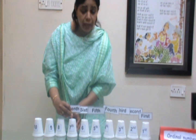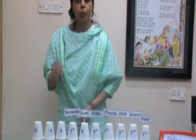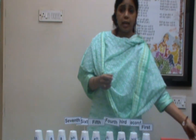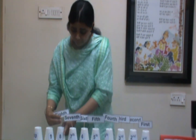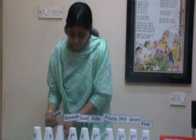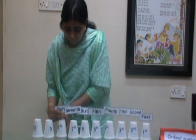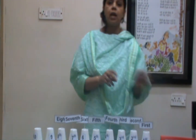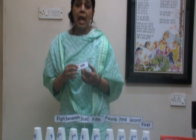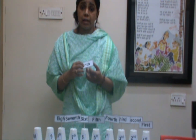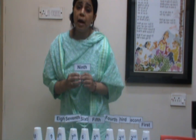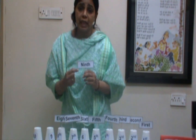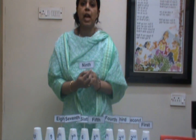For number 8, you just need to put an H and it becomes eighth. For number 9, all the students make a common mistake — you write the spelling N-I-N-E, but in ordinal numbers, you need to cut the E and add TH and it becomes ninth.